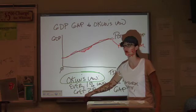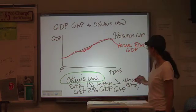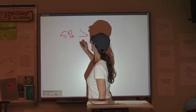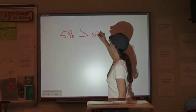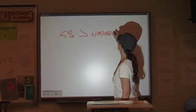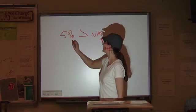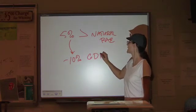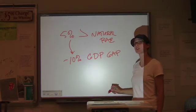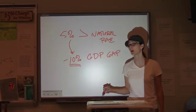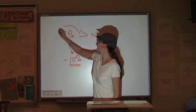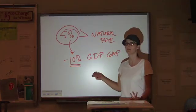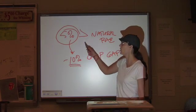Okun's Law says that for every 1% your unemployment is higher than the natural rate, you get a 2% GDP gap. So for example, if we are about 5% higher unemployment than natural, that means we have a 10% negative GDP gap — we are approximately 10% lower than our potential GDP with 5% extra people being unemployed. That's a number you'll need to be familiar with. Just keep in mind it's a 1-to-2 ratio.